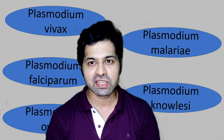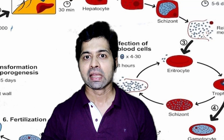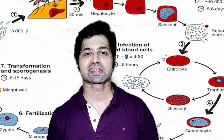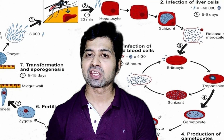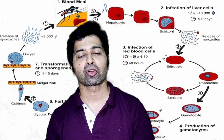As we discussed in the previous video, among the five species of Plasmodium, Plasmodium vivax and Plasmodium falciparum are the most common species which cause malaria in India. Both vivax as well as falciparum take 48 hours for their erythrocytic cycle. As a result, patients tend to get symptoms on alternate days, that is every 48 hours.